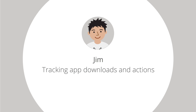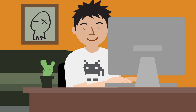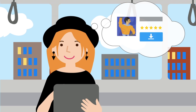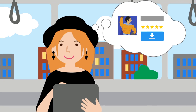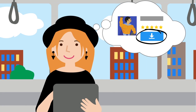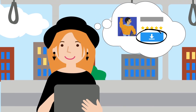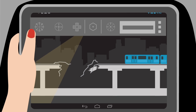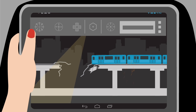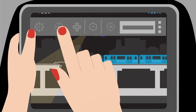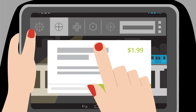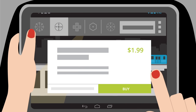Jim — tracking app downloads and actions. Jim designs games for mobile devices. He uses conversion tracking to find out how many app downloads he's getting from his AdWords ads. He also tracks when people who already have his app saw his ad and make in-app purchases within the game.